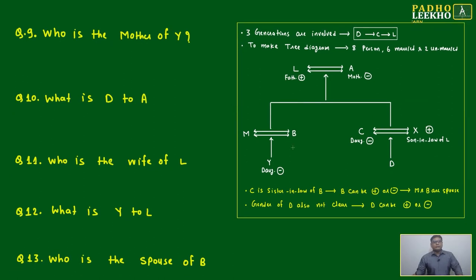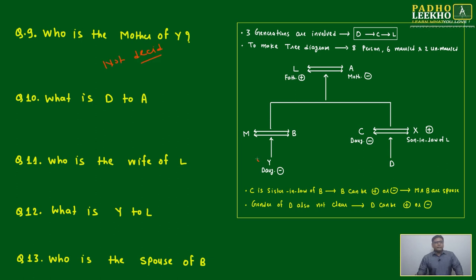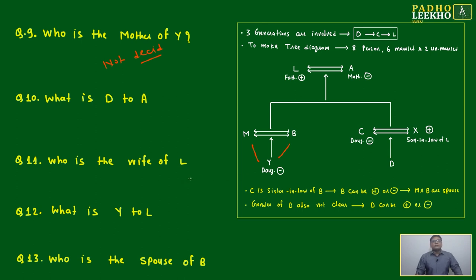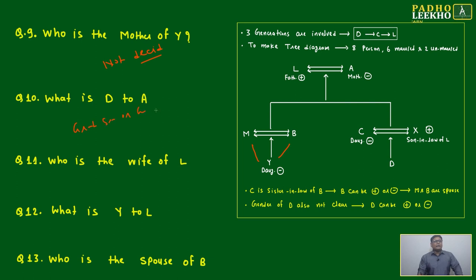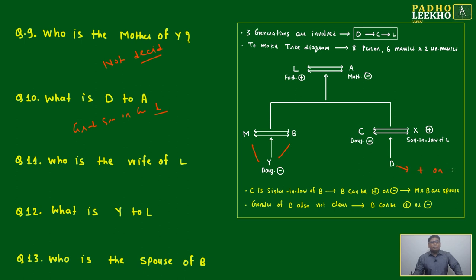Now let's read question number 9: Who is the mother of Y? We cannot say clearly who the mother of Y is, because we don't know who is the husband and who is the wife among M and B — it is not decided. What is D's relation to A? That is clear cut — D is either the grandson or granddaughter of A, because D's gender is not clear.